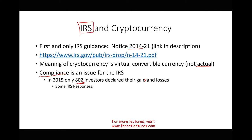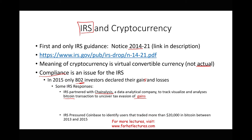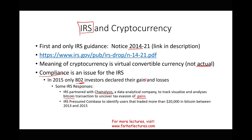As some of the IRS responses: the IRS partnered with a data analytics company called Chain Analysis to track, visualize, and analyze Bitcoin transactions to uncover tax evasions. The IRS also pressured Coinbase — one of the major exchanges — to identify users who traded more than $20,000 in Bitcoin between 2013 and 2015.